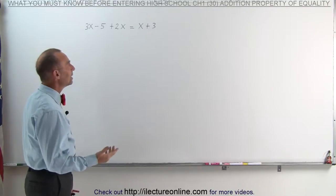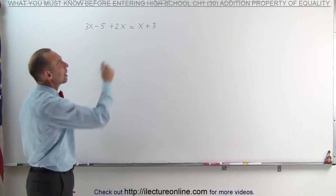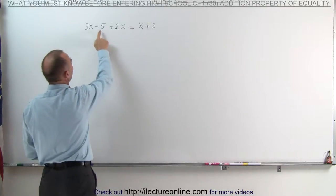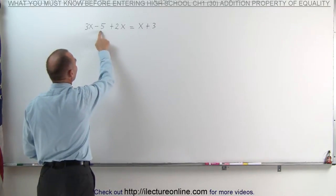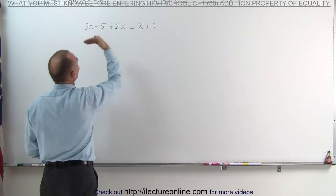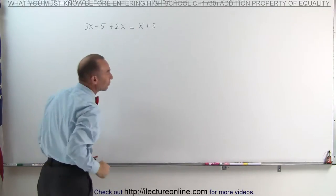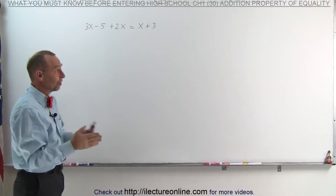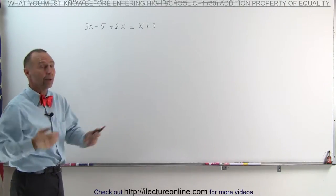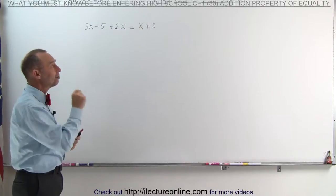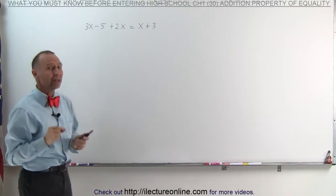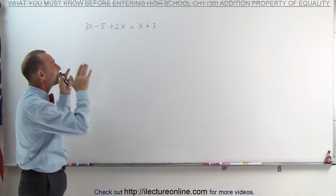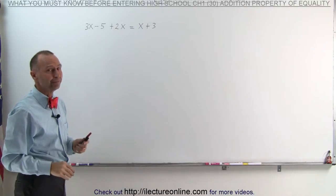One way is to use what we call the addition property of equality. In other words, if I want to get rid of the minus 5 on the left side, I could add a positive 5 to the left side, because minus 5 plus 5 equals 0 and then the number will be gone. But the addition property of equality says that whatever you do to the left side, you must do exactly the same to the right side.